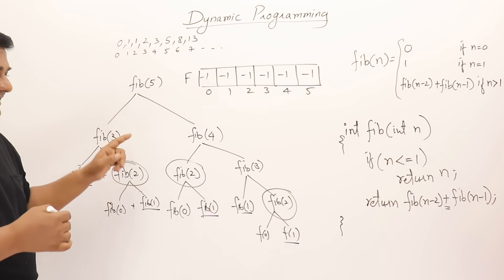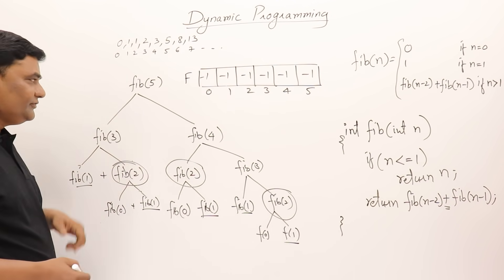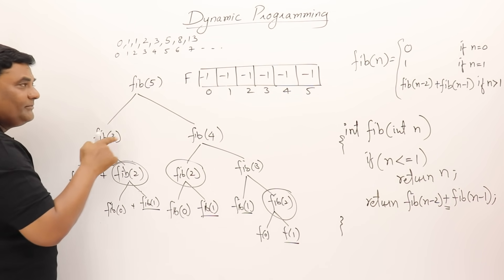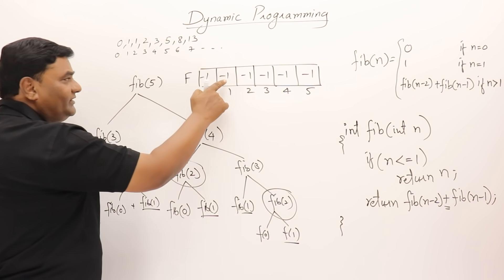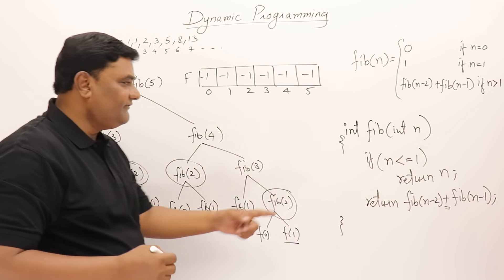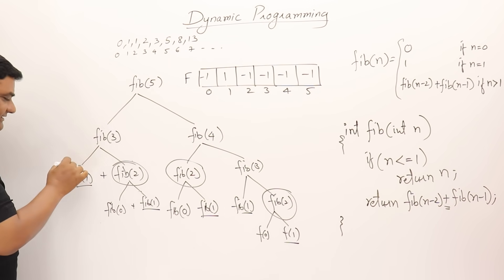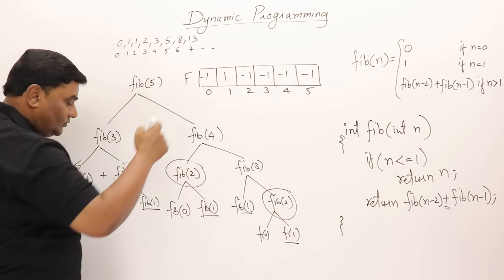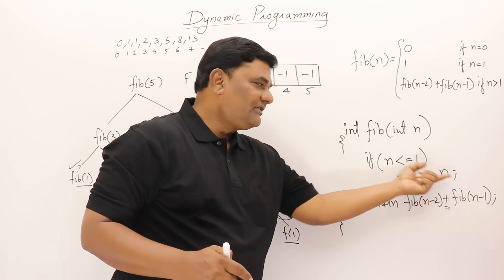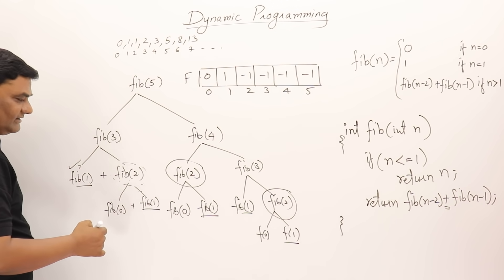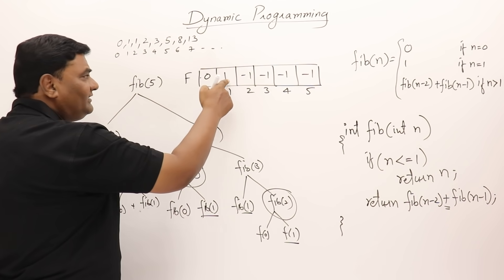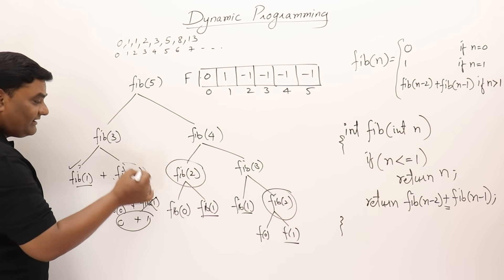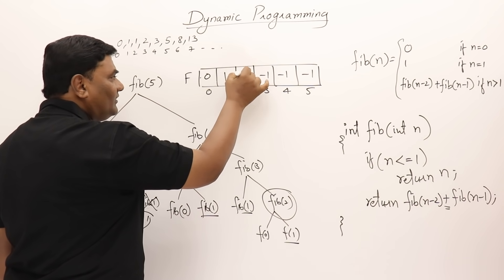Let me trace this again with memoization. fib(5) — we don't know, so make the calls. fib(3) — don't know, call. fib(1) — call the function, result is 1, mark it as 1. Go back: fib(2) — not known, call fib(0), result is 0, mark it. fib(1) — already known, don't call again. Add 0 and 1, result is 1, so fib(2) = 1. Then fib(3) = fib(1) + fib(2) = 1 + 1 = 2, stored.